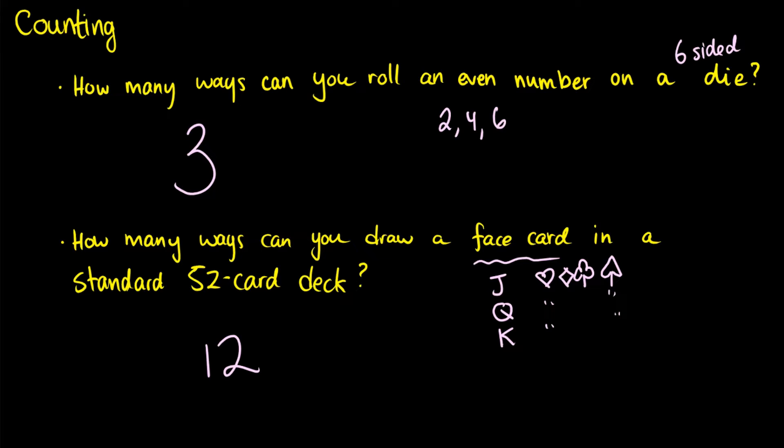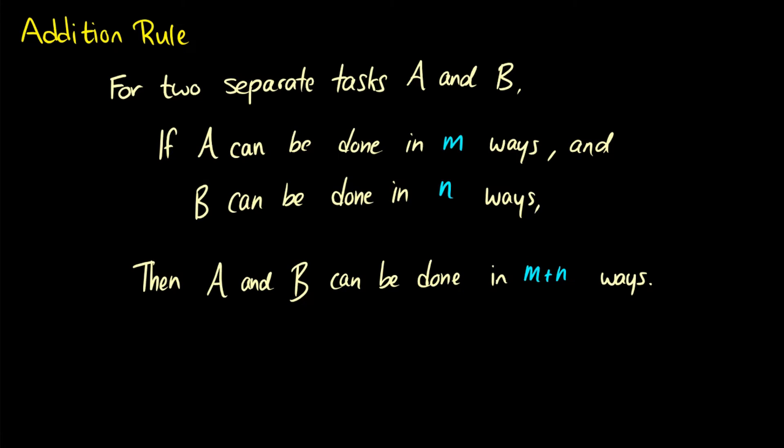Okay, so this is just doing one task inside of some specific domain. We have this thing called the addition rule, and this is when we have two different tasks, A and B. So we could say that A is rolling an even number, and B is picking a face card. So let's say that task A can be done in M ways, and task B can be done in N ways. Then task A and B can both be done in M plus N ways, and these are when the tasks are separate.